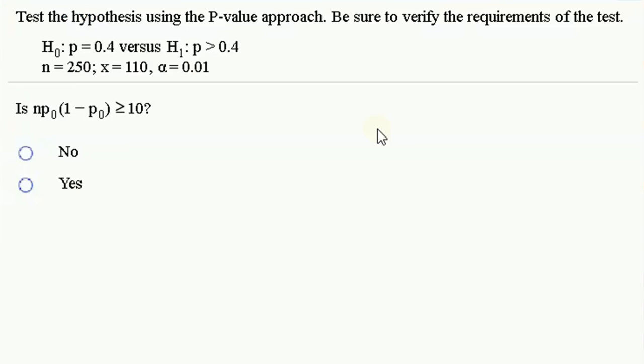Okay, using the p-value approach, we have a hypothesis test to do. The null hypothesis is that the population proportion is 0.4. The alternative is that the population proportion is greater than 0.4.